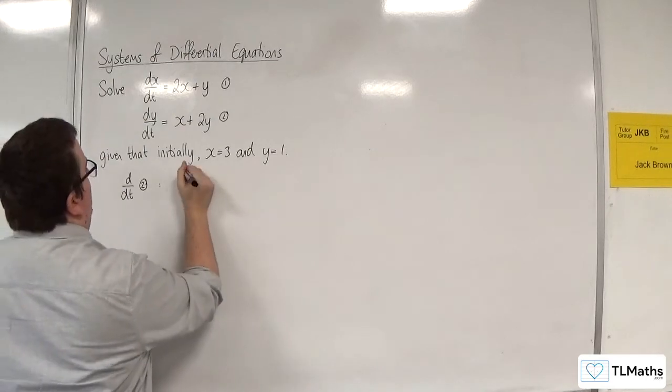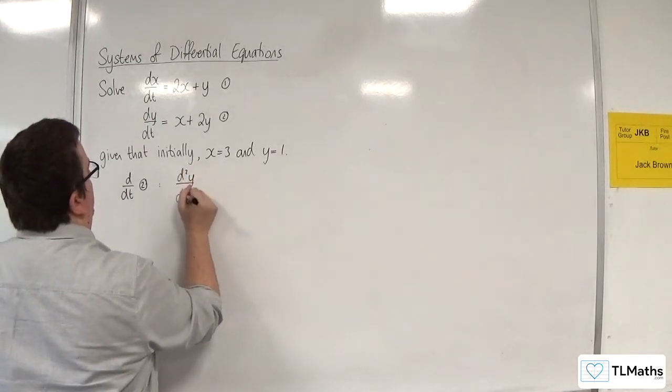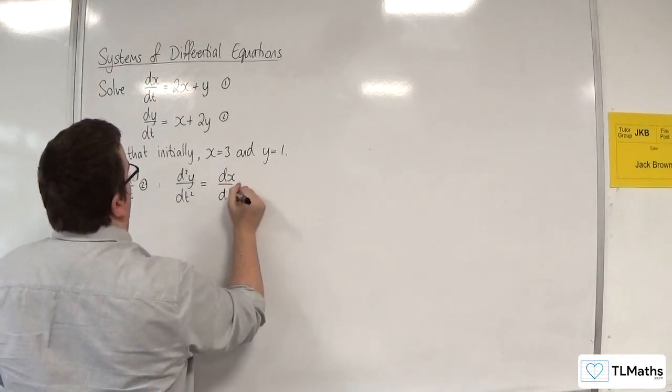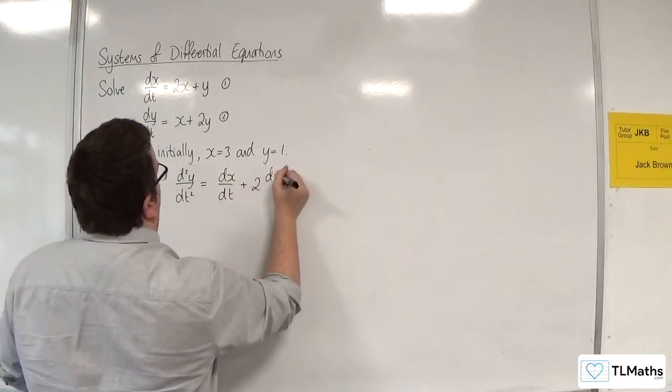So I'm going to get d2y by dt squared is equal to dx by dt plus 2 lots of dy by dt.